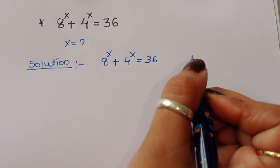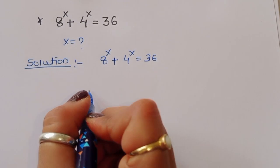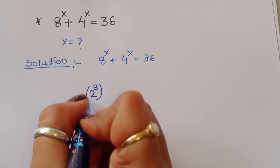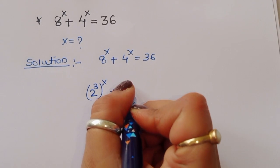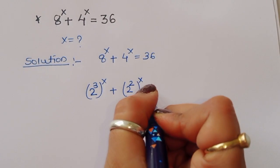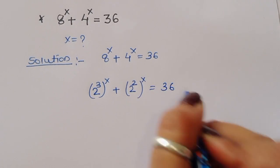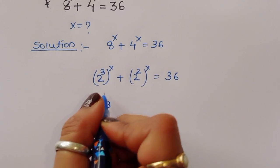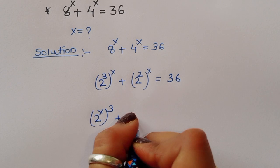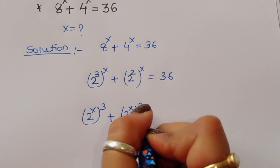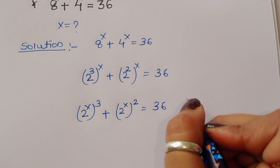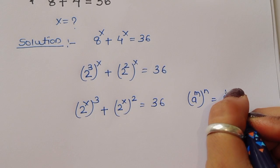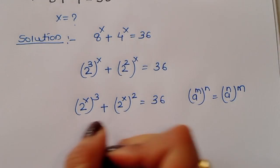Now, 8^x we can write as (2³)^x, and 4^x we can write as (2²)^x, so the equation becomes (2³)^x + (2²)^x = 36. We can rewrite this as (2^x)³ + (2^x)² = 36, using the formula a^(m·n) = (a^m)^n.